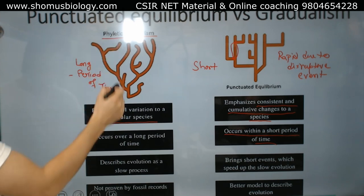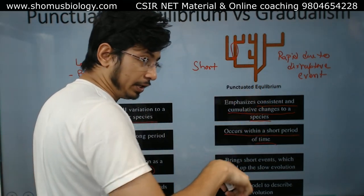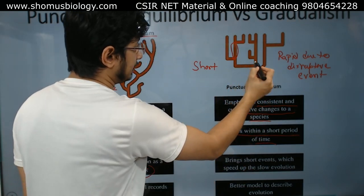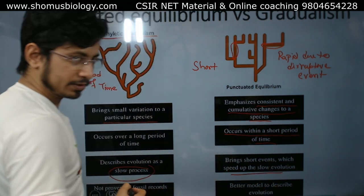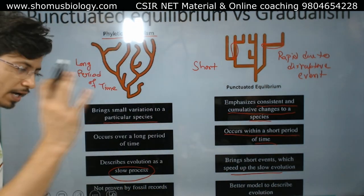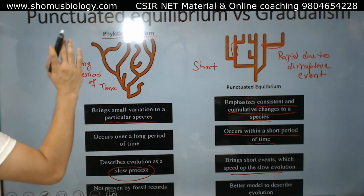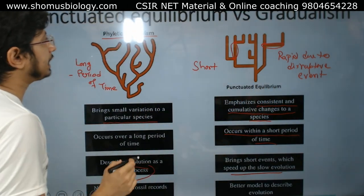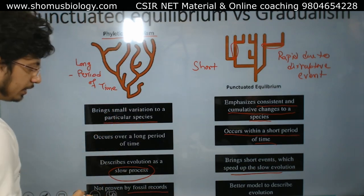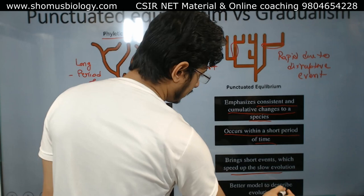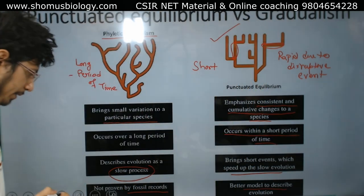The process of gradualism is a very slow process. The process of punctuated equilibrium also takes time, but the exact moment where the morphology changes is fast-paced. Now, the most important concept between the two is that in gradualism we do not have strong fossil records, but we do have fossil records to back up data for punctuated equilibrium.